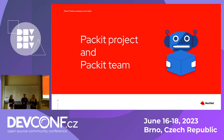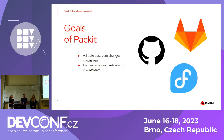What is the Packit project and who is the Packit team? Packit has two main goals: the first is validating upstream changes happening in repositories on GitHub and GitLab during the time the changes are developed, before they get to downstream distributions such as Fedora or RHEL. The second one is bringing upstream releases downstream, specifically to Fedora.